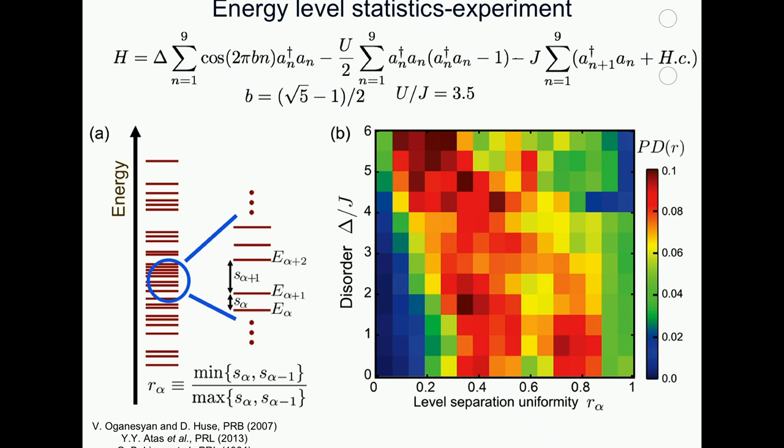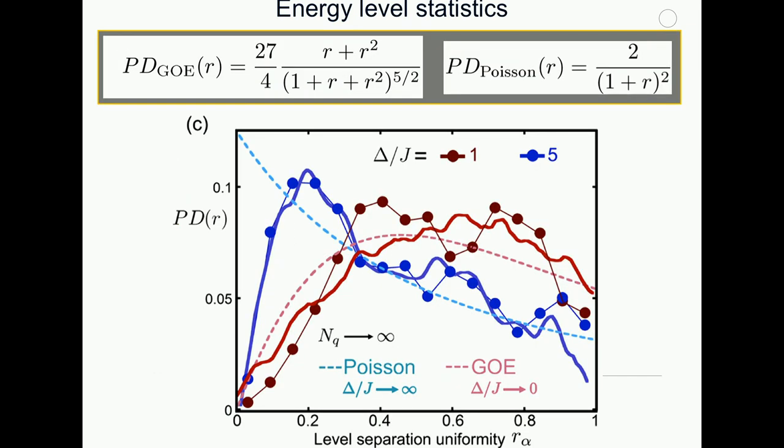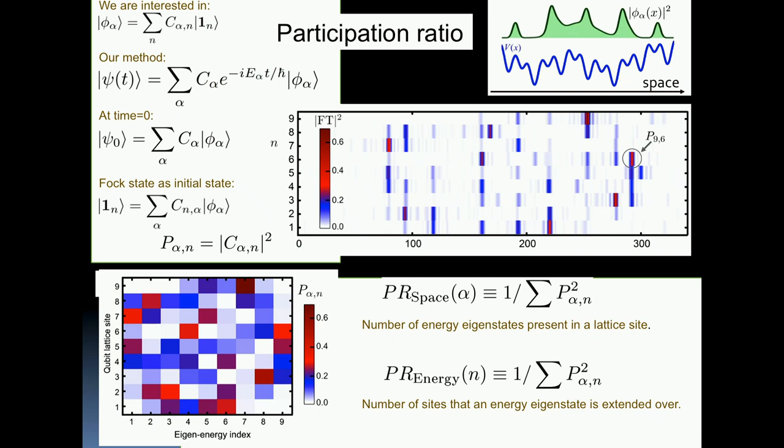And this is the experimental result. Again, this is the Hamiltonian. You fix U over J at 3.5, which is a reasonably large value. As you go up in the disorder, so this is zero disorder. As you go up in the disorder, you have the Aubry-André and you have this, and you see how the GOE looks like. And as you increase, you go towards the Poisson distribution, which is shown here. Now, if you make cuts here, just to make this, remember for the linear case, delta over J equals 2 was the transition, but this is the interacting case. So if you make a cut, then you get that these are the corresponding, the dotted lines are how they come from the Poisson and the GOE, and this is the experimental values on top. So as we change between delta less than 1 to 5 over J, you go from a GOE to a Poisson distribution.